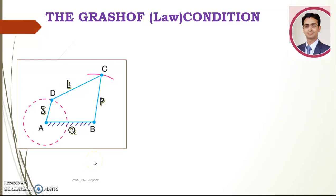Now we are going to see Grashof's condition or Grashof's law. Here in a four bar mechanism, the four links are AB, BC, CD, and DA. These are the four links.